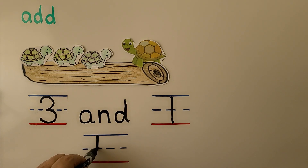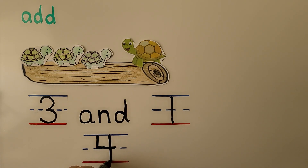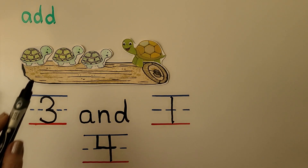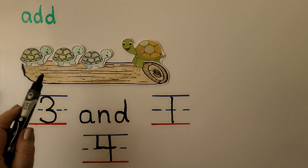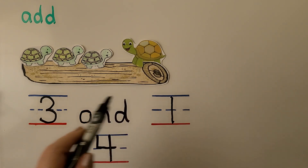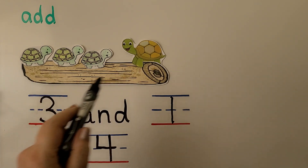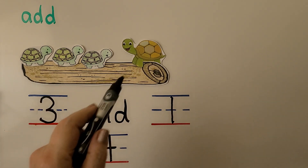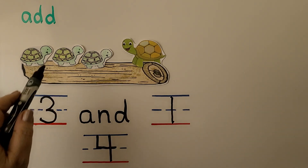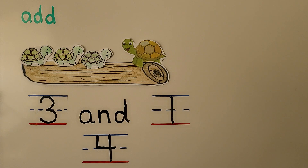We can count them. To add them, the word 'and' tells us we need to add: one, two, three, four. We can write the number four. Three and one is four. When a group is put together with another group, the two groups are added together. Three and one is four.